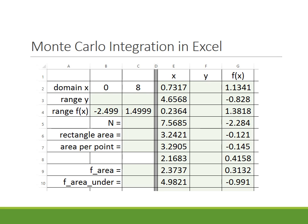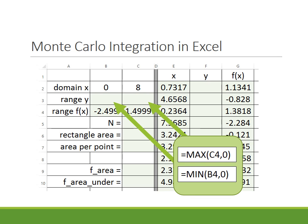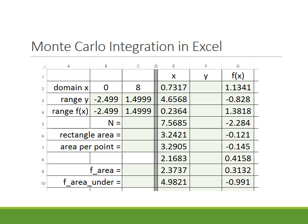Next, we get the range for Y, which can be different from the range for F(X). We need a range that goes between the X-axis and the function. For the lower bound in cell B3, we take the minimum of the function range and zero — ensuring that if the function is always positive, we still include points from the axis up to the function. Similarly, for the upper limit we take the max between the function range and zero. In this example the Y range turns out the same as the function range, but this step ensures we capture values from the axis to the function.